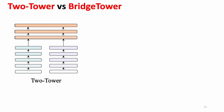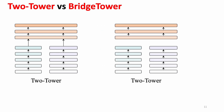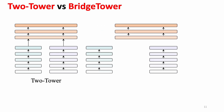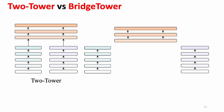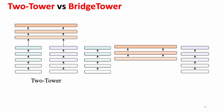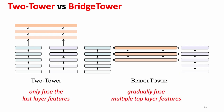Therefore, we propose the Bridge Tower architecture. Different from the two-tower architecture, Bridge Tower builds bridges between the cross-modal fusion module and the unimodal towers. The main difference is that two-tower only feeds the last layer of features, but Bridge Tower gradually feeds multiple top-layer features.